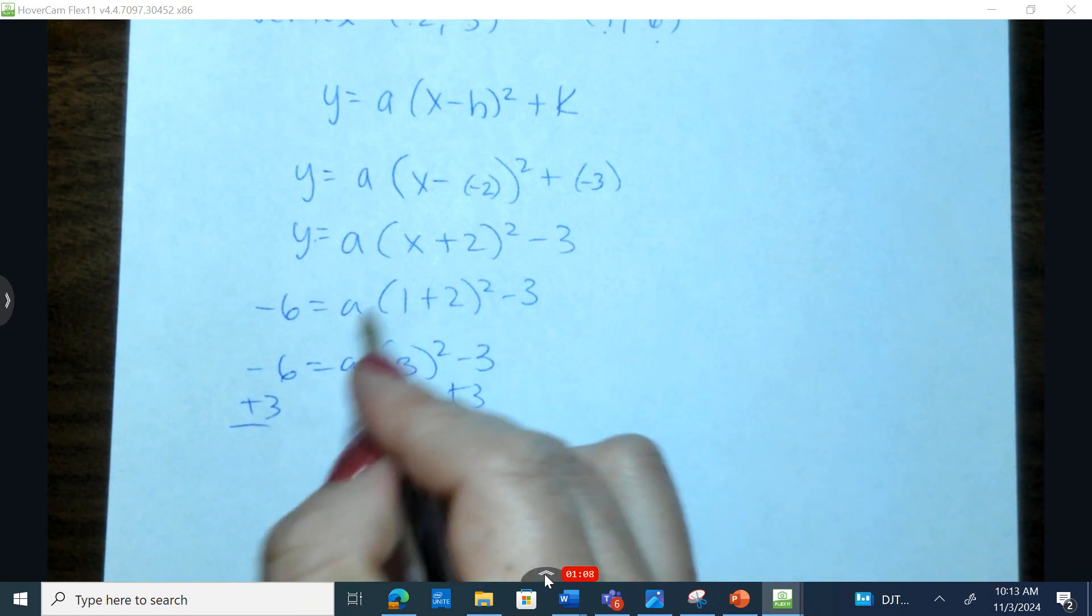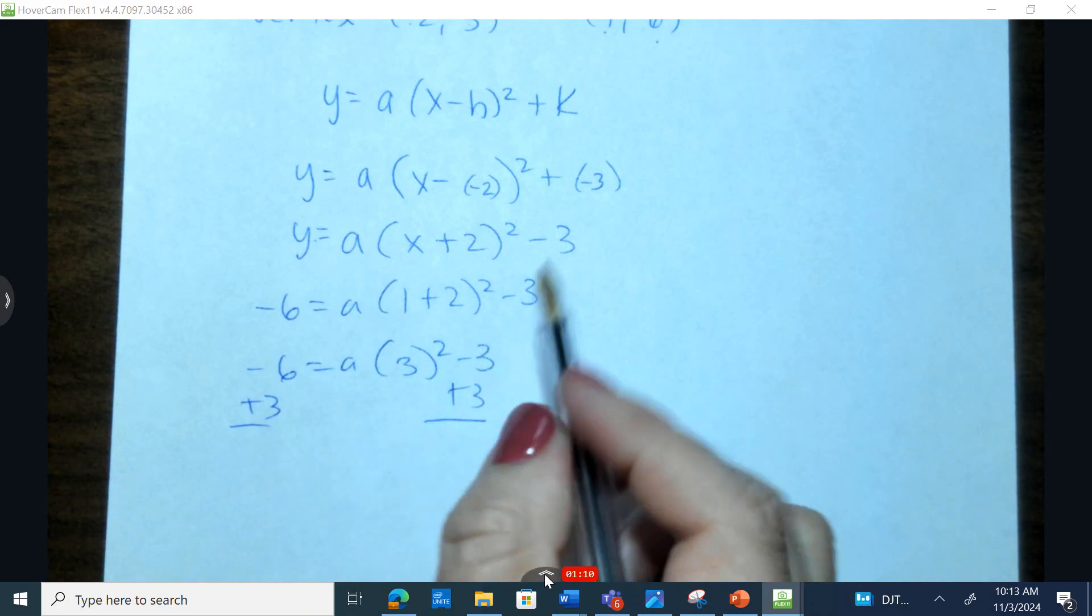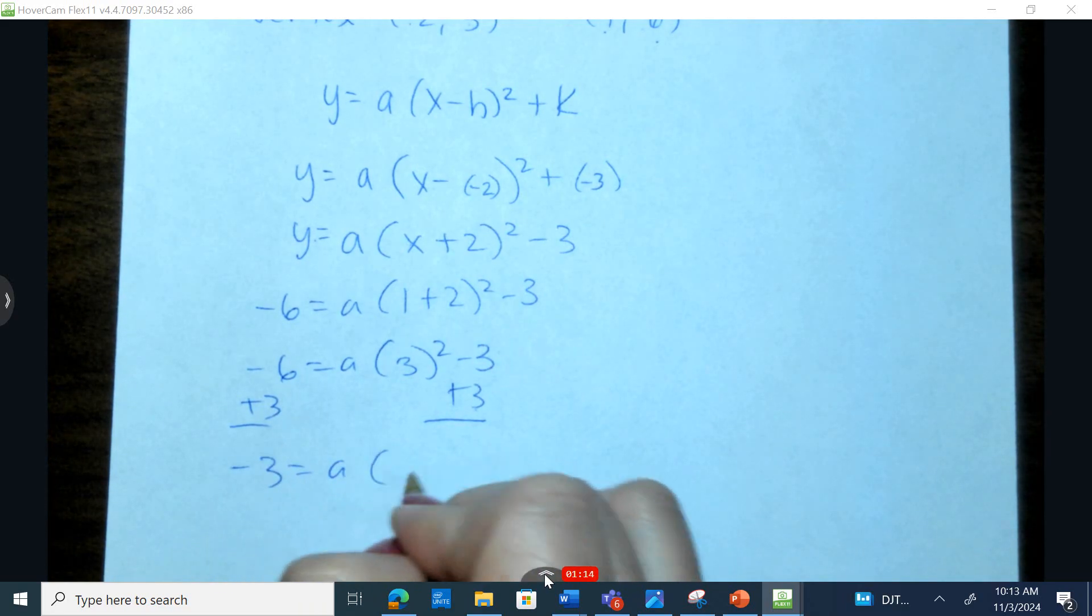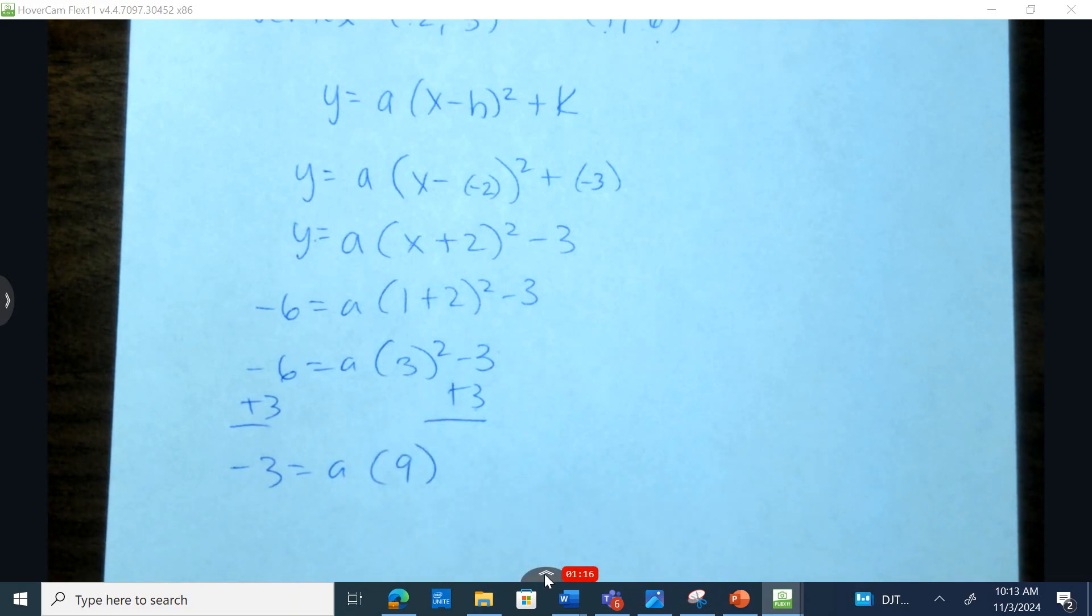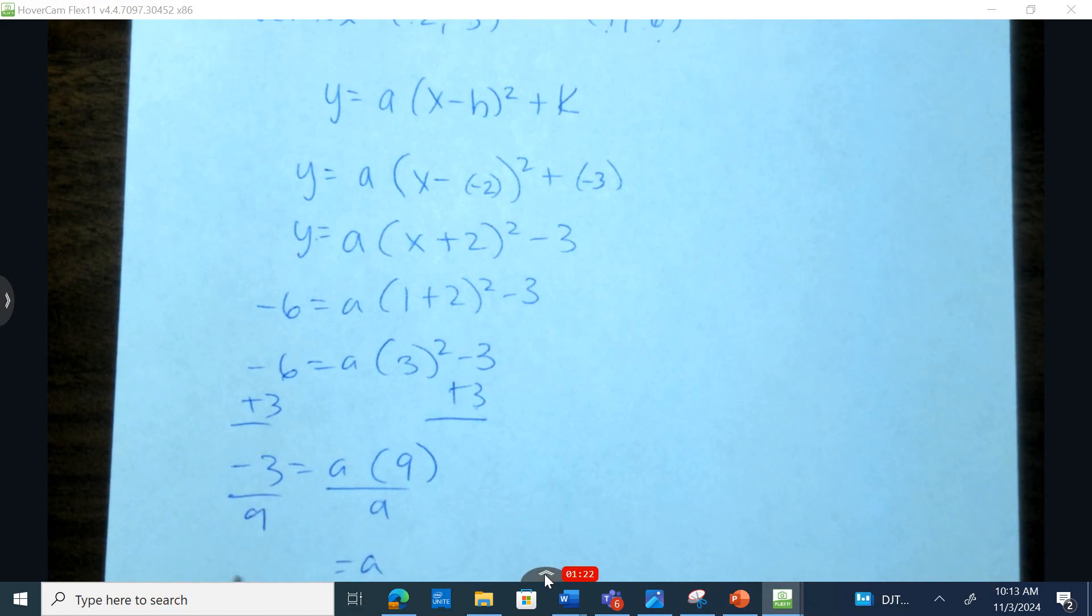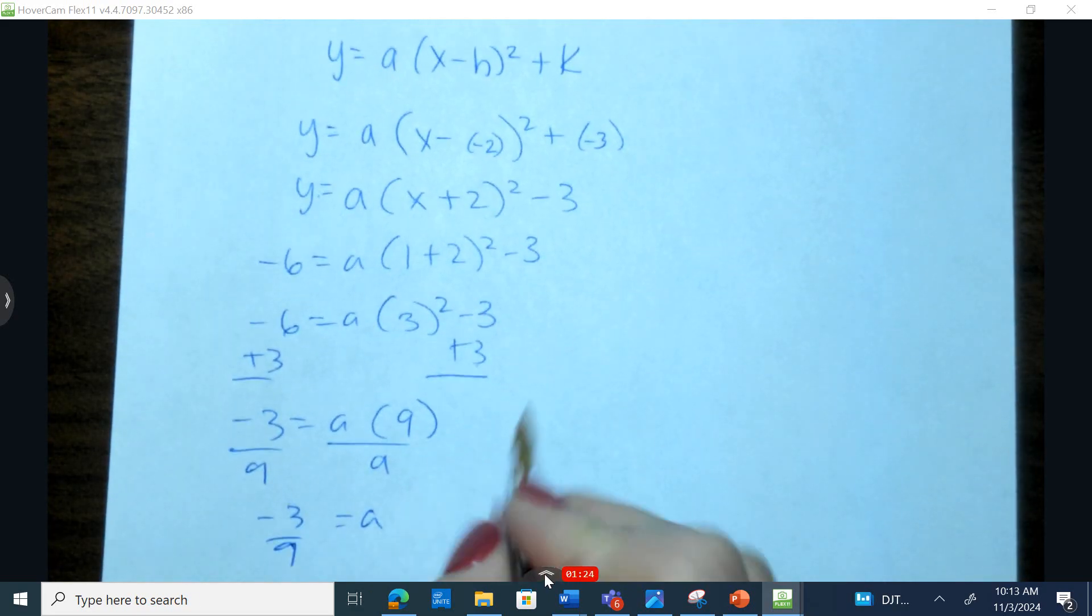On the side that contains the variable, what can you remove by multiplying or dividing? 3 squared is 9. And now on the side that contains the variable, what can you remove by multiplying or dividing? So a is negative 3 over 9, which reduces to negative 1 third.